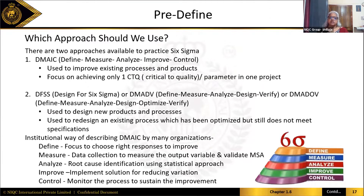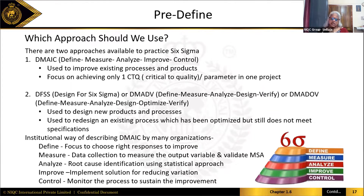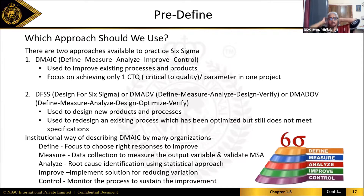There are two approaches available to us. One is the DMAIC approach and the other is the DFSS approach. DMAIC is used whenever you have an existing process — when something is already happening and you've observed that there are some problems in the process. For example, in Raj's pizza delivery shop, we know there were issues with delivery time, so we can use the DMAIC approach.